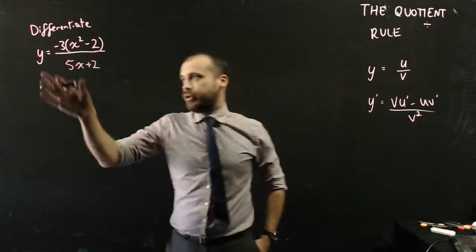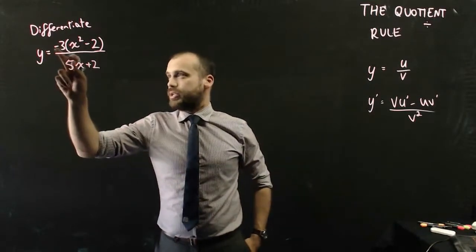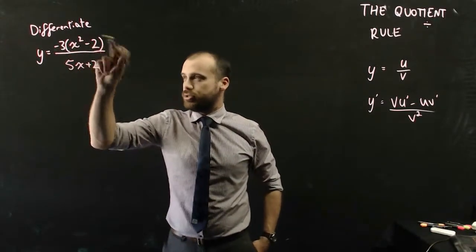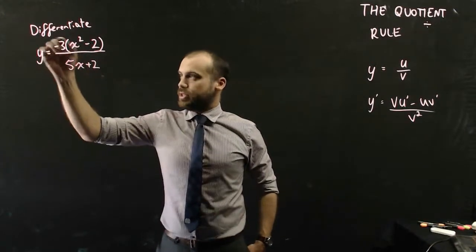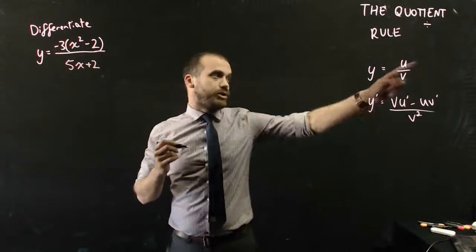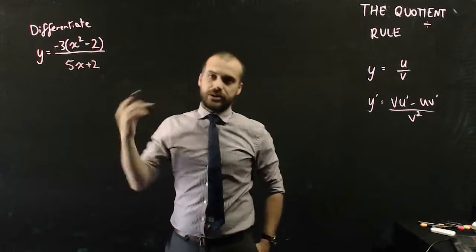Let's do an example. So I'm going to differentiate this function, y equals negative 3 bracket x squared minus 2 over 5x plus 2. So this thing up the top, all of it, is going to be my u, and this bit down the bottom is going to be my v.